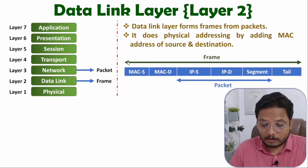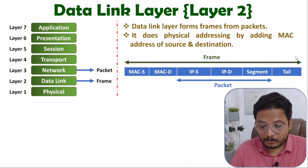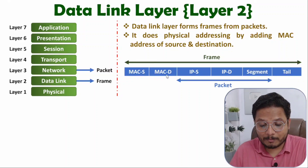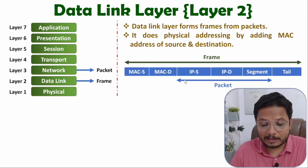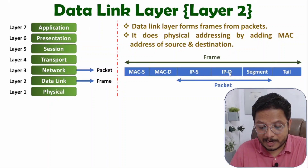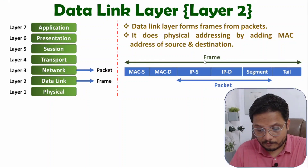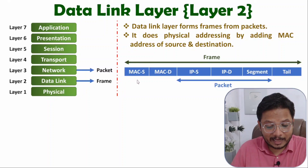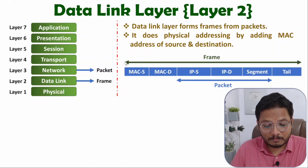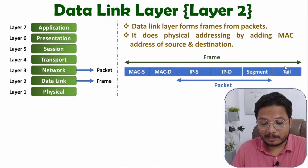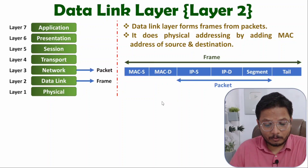Inside a frame, there are several pieces of information: the MAC address of source, MAC address of destination, and the packet itself. The packet contains the source IP, destination IP, and segment. A tail is also added along with the packet to form the frame. So inside the Data Link Layer, we are adding additional information based on MAC address of source and destination, and a tail.